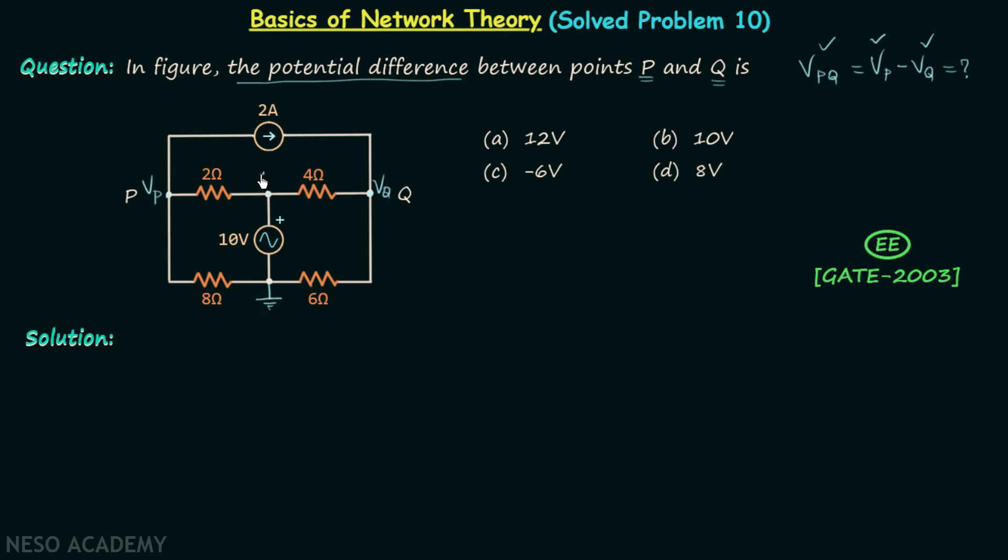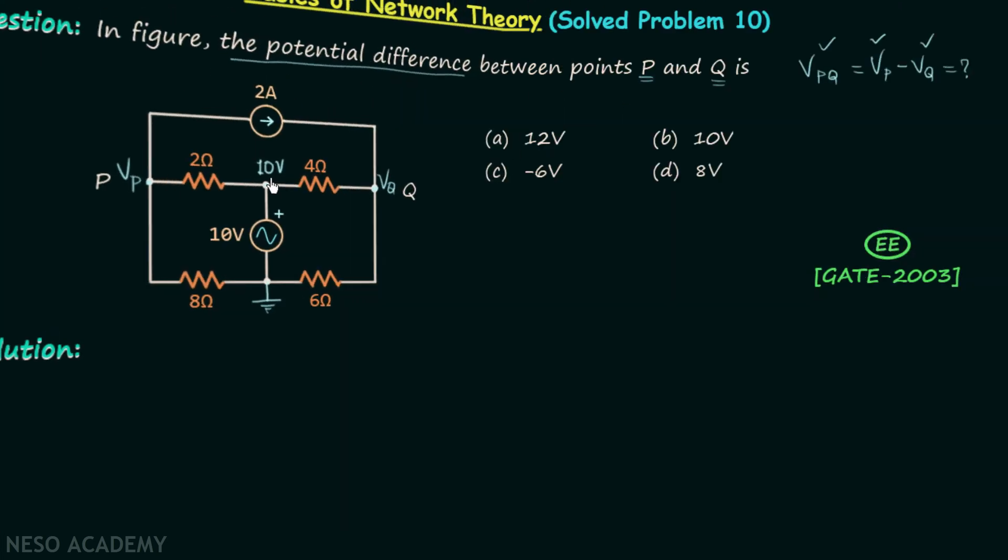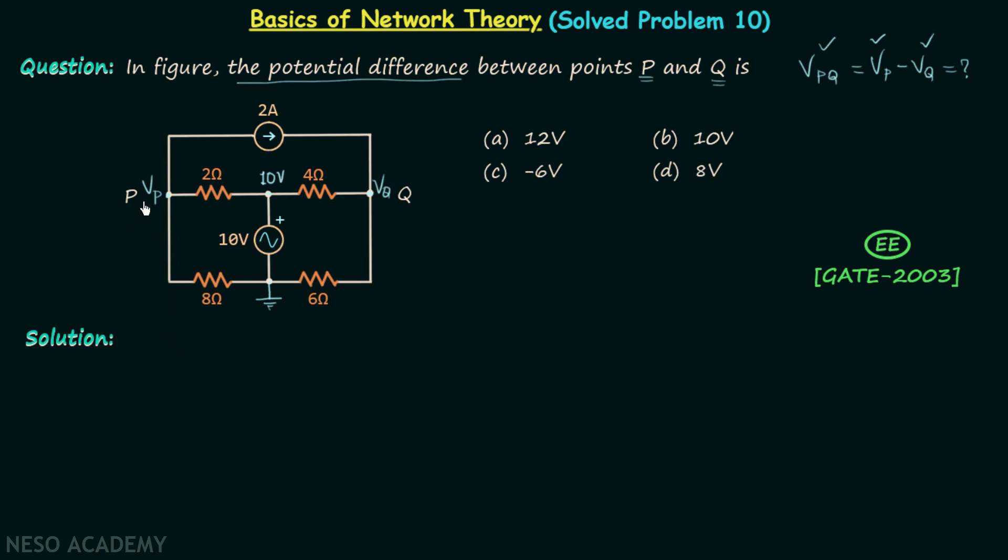Because of this, this node will have the potential equal to 10 volts. Now we will apply KCL at node P and for this we will assume our potential VP is the largest potential in the network and therefore all the currents will leave the node P. Let's say this current is current I1, this current is current I2 and this current is current I3.